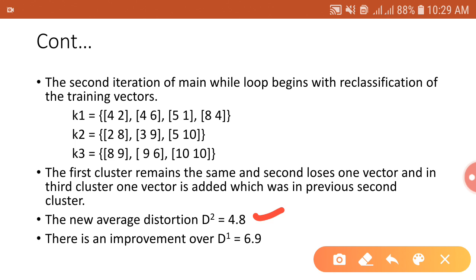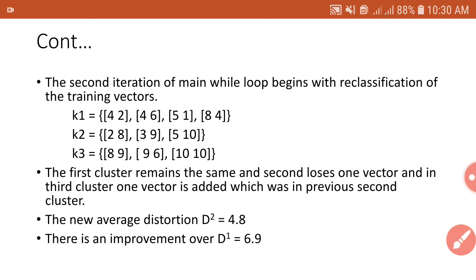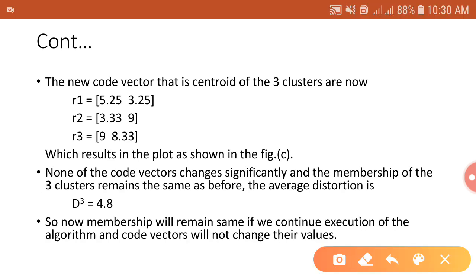Next, compute the new code vectors by finding the centroid of each cluster. Since the training set for cluster K1 is unchanged, R1 remains (5.25, 3.25). For cluster K2, the new code vector is R2 = (3.33, 9). For cluster K3, the new code vector is R3 = (9, 8.33).